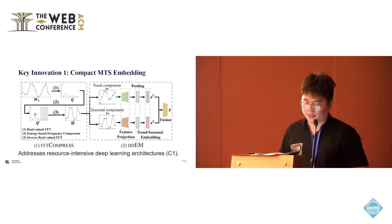In FFT-Compress, we use a wavelet-valued FFT to transform the MTS window into its frequency domain. Then we use an energy-based frequency compressor to select and retain only the most active frequency components and compress the input. Finally, inverse wavelet-valued FFT is used to convert the compressed frequency-domain data back to the time domain.